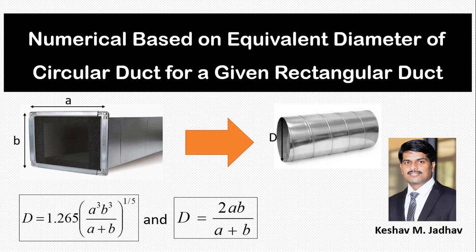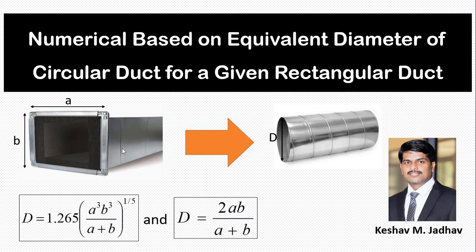Hello everyone, my name is Keshav Zadam and in this video we will solve numericals based around calculation of equivalent diameter of circular duct for a given rectangular duct. In another video we have derived these two formulae and the link of that video is given in the description. In this video we will solve two numericals. In the first numerical we consider a given rectangular duct and calculate the equivalent diameter of circular duct. In the second numerical, a circular duct is given and we find the equivalent dimensions for rectangular duct.